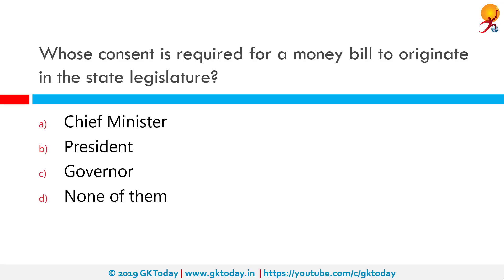Whose consent is required for a money bill to originate in the state legislature? Correct answer is Governor. A money bill is first introduced in the Vidhan Sabha. After the bill is passed by both houses, it is sent to the Governor for his assent.